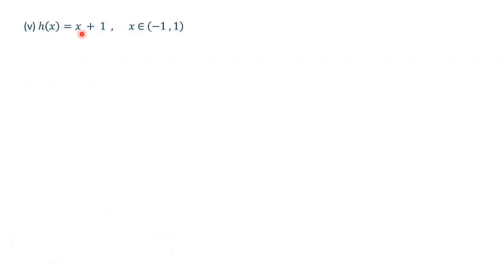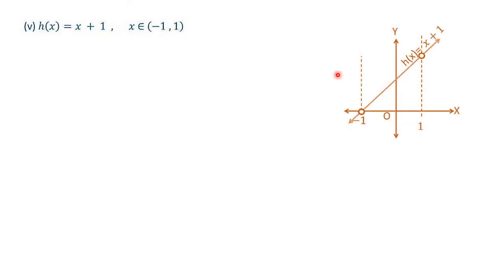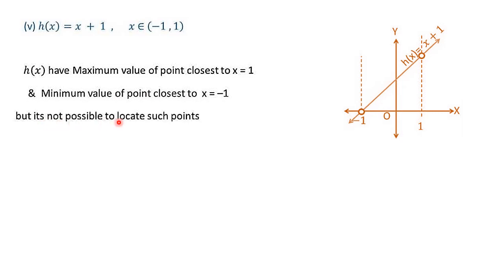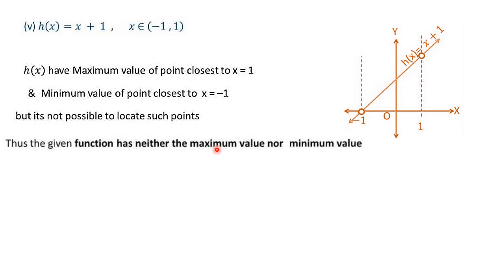Fifth question: h(x) = x + 1, where x belongs to the open interval (−1, 1). Since it is an open interval, neither −1 nor 1 is included. The graph of x + 1 shows that h(x) has a value close to 1 (near x = 1) and close to −1 (near x = −1), but we cannot fix a particular point. Since such points cannot be located, the given function has neither a maximum value nor a minimum value.